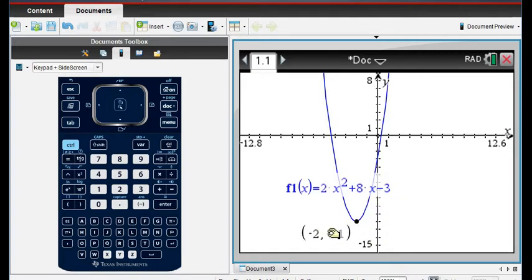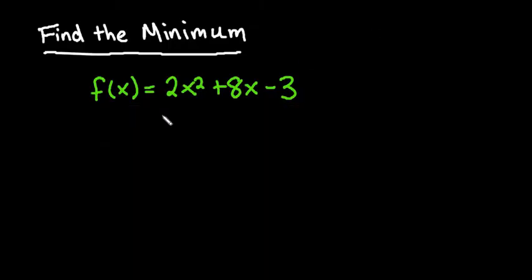If you can't see it, you can always hover over it and move it so that you can see the values. So that tells us that we have a minimum of negative 11 when x is negative 2. So we're going to go ahead and write that down. We have a minimum. Sorry, I don't have my pen selected. We have a minimum.